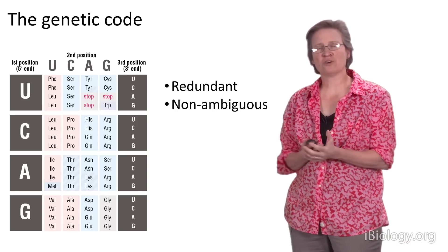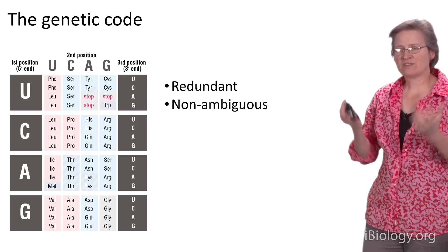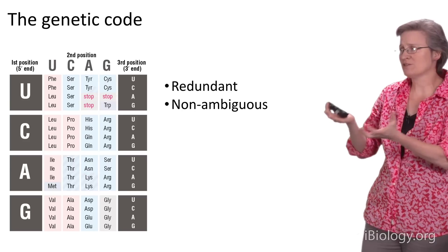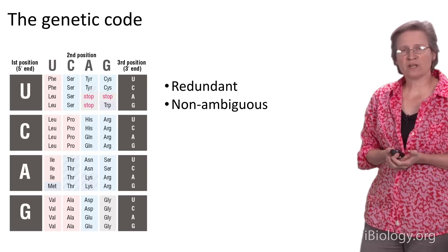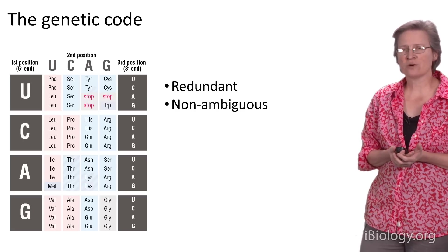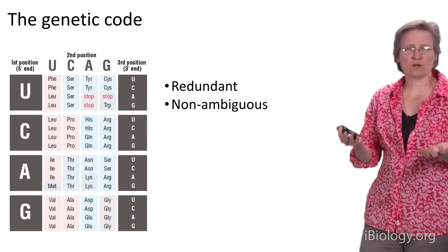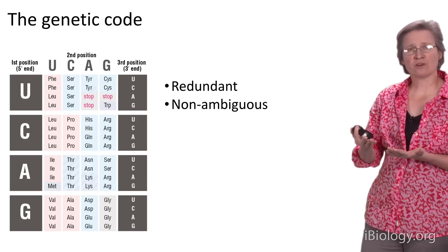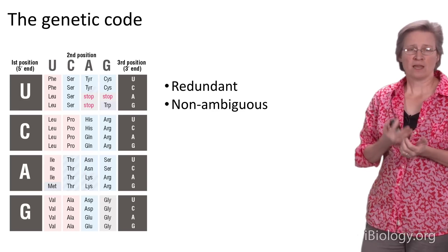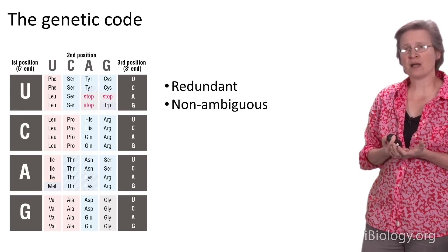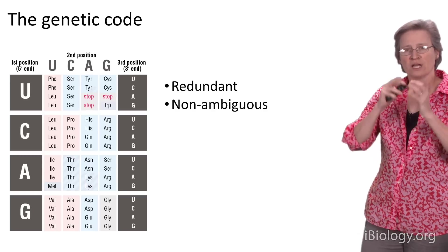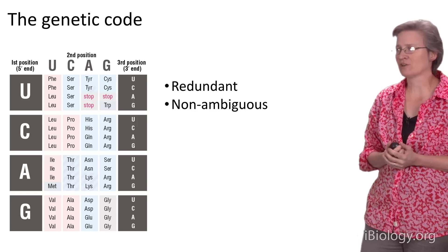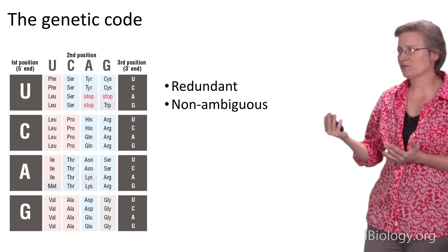The genetic code is at the heart of translation. It's the set of rules that tells us how we get from one alphabet to another — from nucleotides to amino acids. There are 20 different amino acids and four different building blocks, so a one- or two-letter code wouldn't be sufficient. A three-letter code, with four raised to the third power, gives 64 different letter groups that can specify the 20 different amino acids. And that's what nature has settled on — three nucleotide letters correspond to a single amino acid.